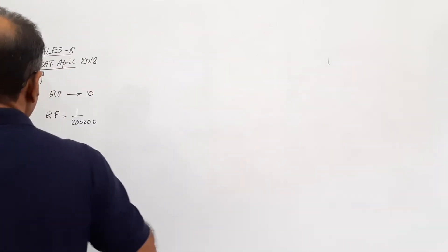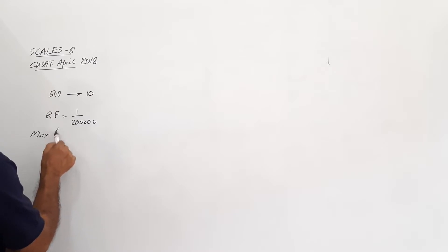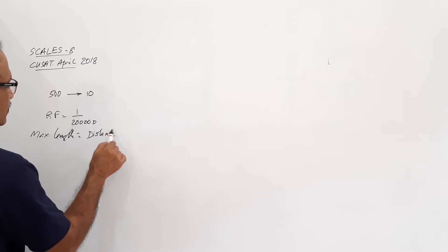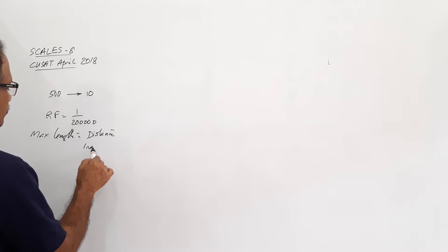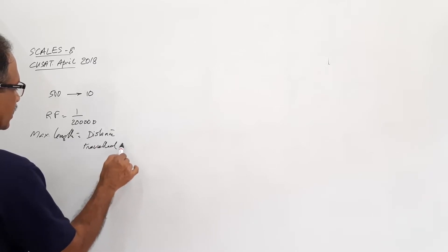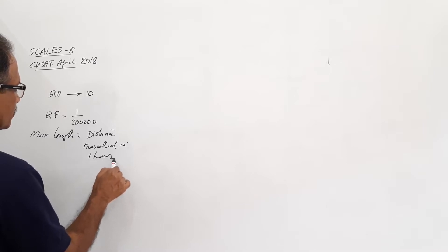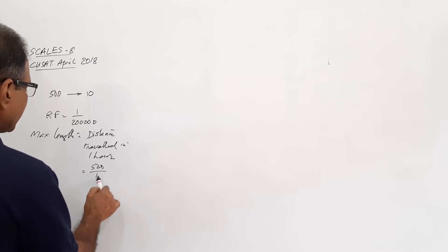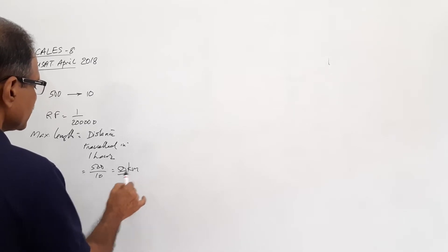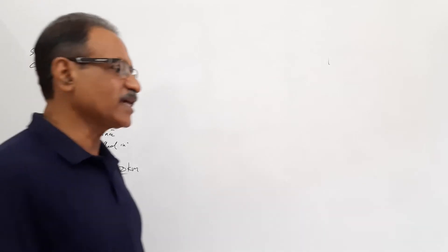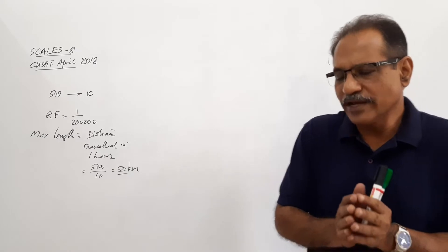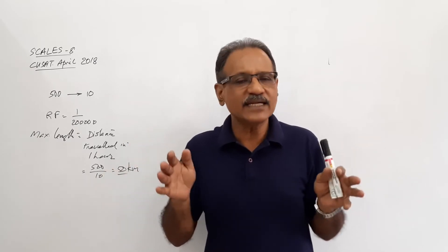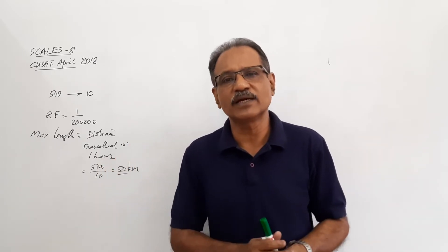If this is the RF, let us assume maximum length equals the distance traveled in 1 hour. So how much is it? It equals 500 divided by 10, equals 50 km. So you take maximum length as 50 km — the distance traveled in 1 hour. When you draw the scale with 50 km as the maximum length, you can show the distance traveled in 46 minutes very comfortably.